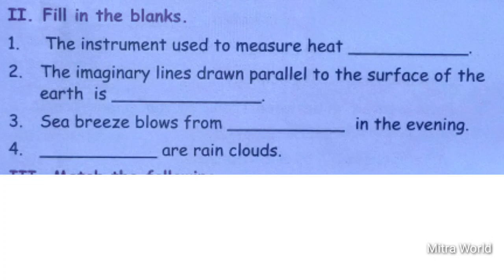Next: the imaginary lines drawn parallel to the surface of the earth are called latitudes. Third question: sea breeze blows from dash in the evening. Very good — sea breeze blows from sea to land in the evening. Fourth question: dash are rain clouds. Very good — nimbus clouds are rain clouds. Good children, I hope you have all written the correct answers — now check your answers.